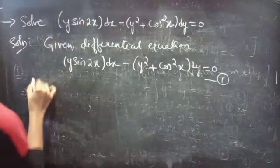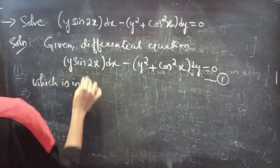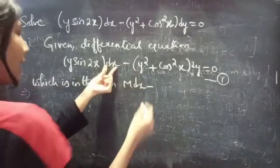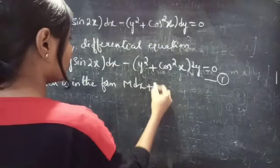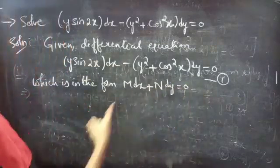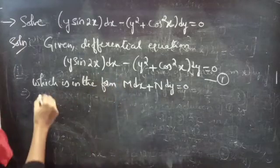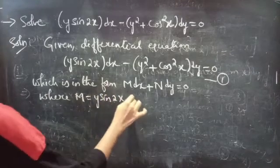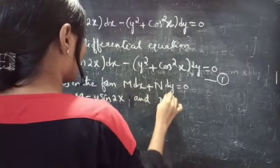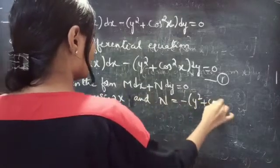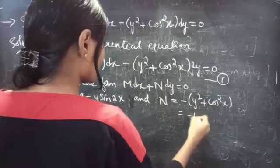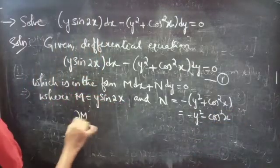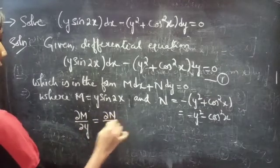This equation is in the form M dx plus N dy equals 0. By comparing the two equations, we get M equals y sin 2x, and N equals minus of (y squared plus cos squared x), which equals minus y squared minus cos squared x.